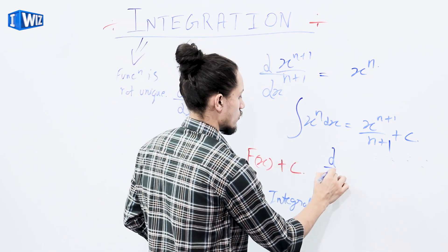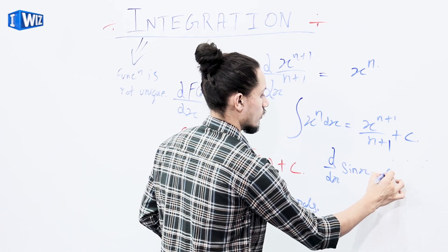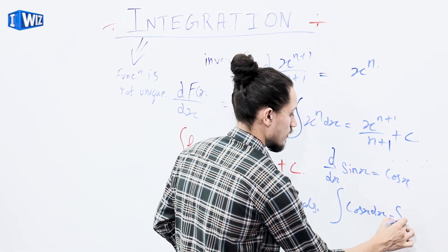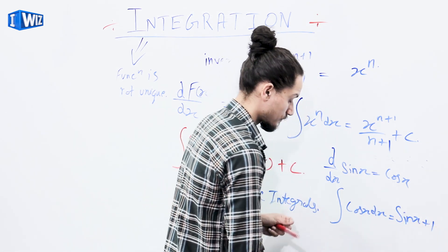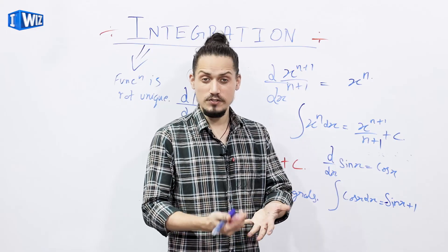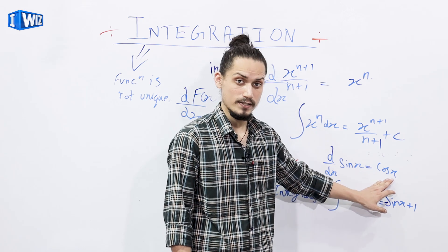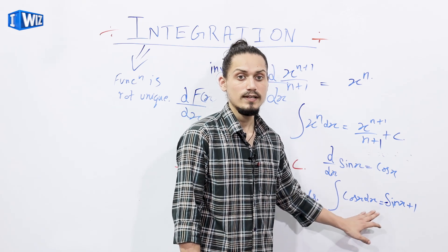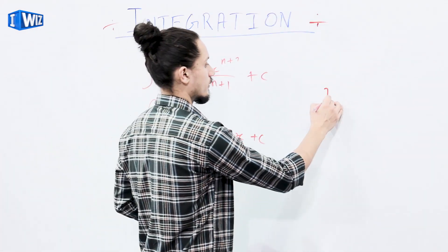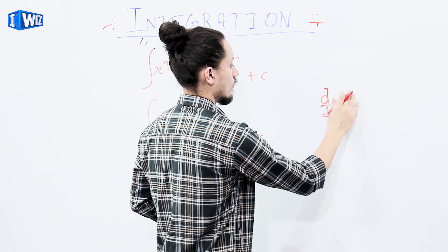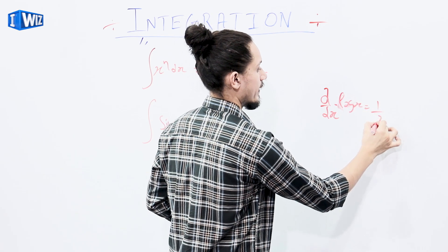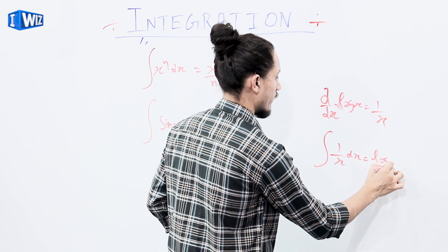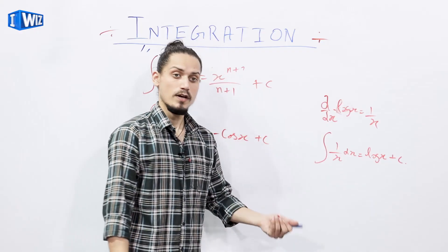Similarly, we know differentiation of sin x equals cos x, so integration of cos x dx equals sin x + C. And differentiation of cos x gives minus sin x. We also know differentiation of log x equals 1/x, so integration of 1/x dx equals log x + C. These are the basic formulas of integration — you can pause the video to check them out.